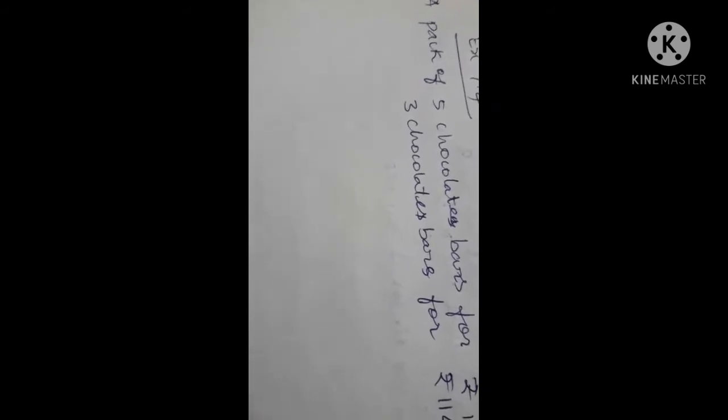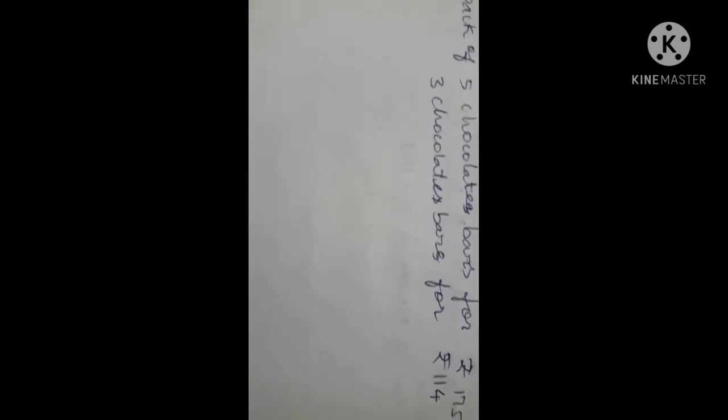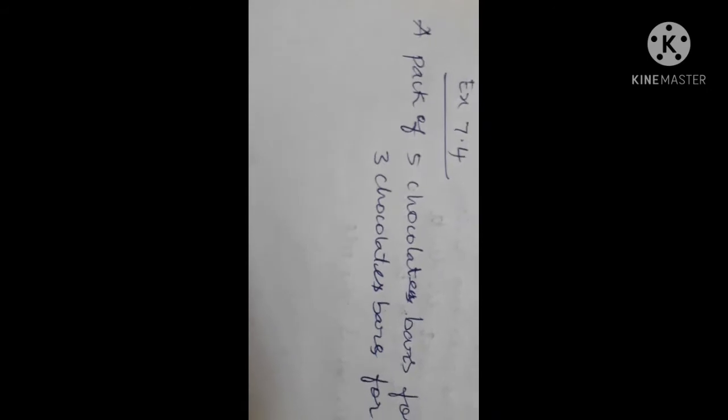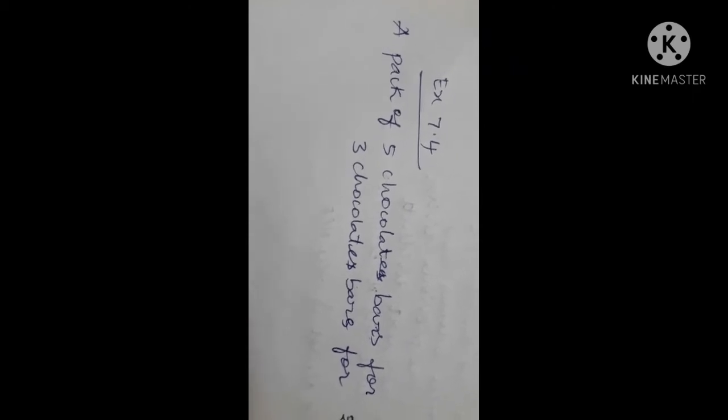In exercise 7.4, you will be asked questions like this: you and your friend go shopping — you go today and your friend goes tomorrow. You buy a pack of 5 chocolate bars for Rs. 175 and your friend buys a pack of 3 chocolate bars for Rs. 114. Who saves more money? You should find what is the cost of 1 bar of chocolate for each person, because 5 chocolates and 3 chocolates are not equal — only 1 chocolate and 1 chocolate can be compared.